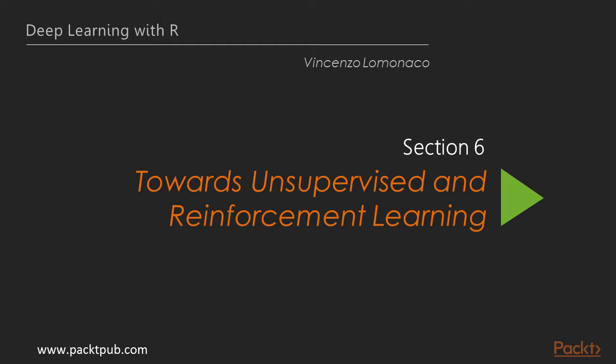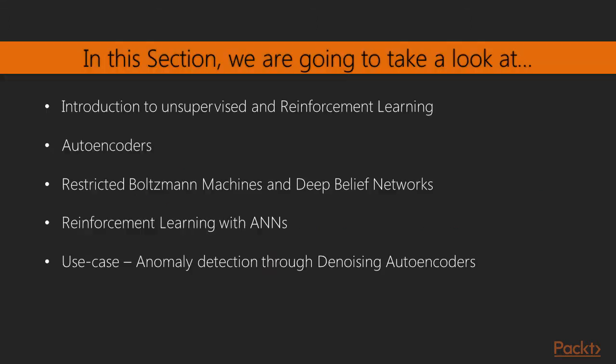Hi and welcome back to the sixth section of our course about unsupervised and reinforcement learning. This section will be divided in five different videos. In the first one we will introduce two different learning paradigms to go beyond the classical supervised learning approach. Then we will rapidly introduce three different unsupervised deep learning models: autoencoders, restricted Boltzmann machines and deep belief networks.